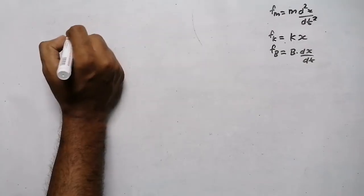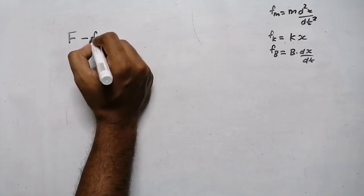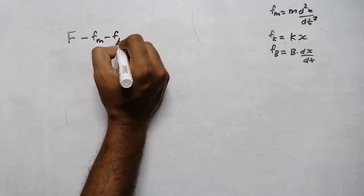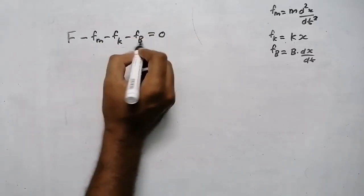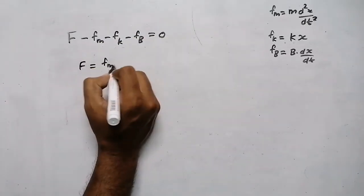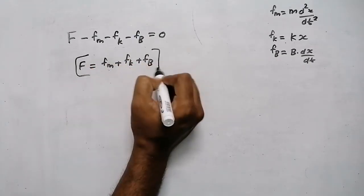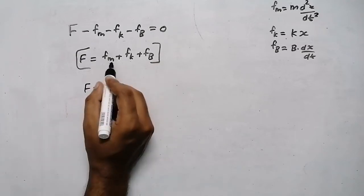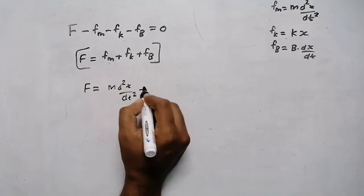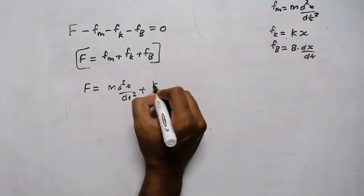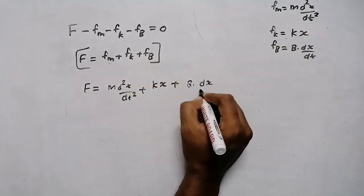According to Newton's second law, the sum of forces: F - fm - fk - fb = 0, which gives F = fm + fk + fb. Substituting all three: F = M · d²x/dt² + k·x + b · dx/dt. This is the complete differential equation for the mechanical translational system.